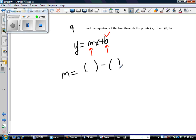y2 minus y1 over x2 minus x1. So, here's x1, here's y1. Here's x2, here's y2. So, b minus zero over zero minus a. y2 minus y1 over x2 minus x1. So, that's b over negative a. And we never leave a negative in the denominator. So, there's my slope.